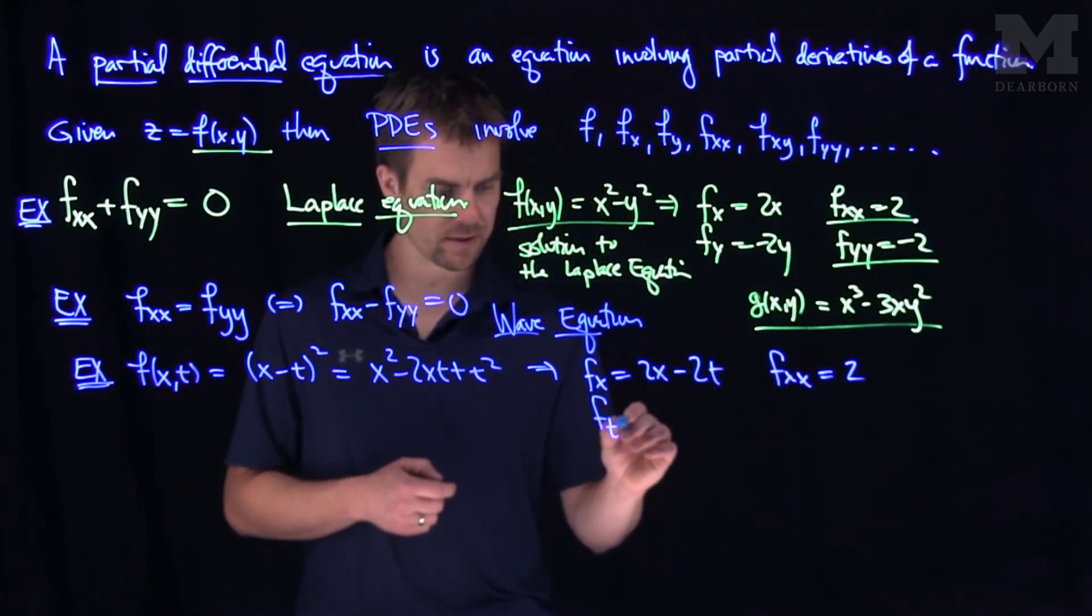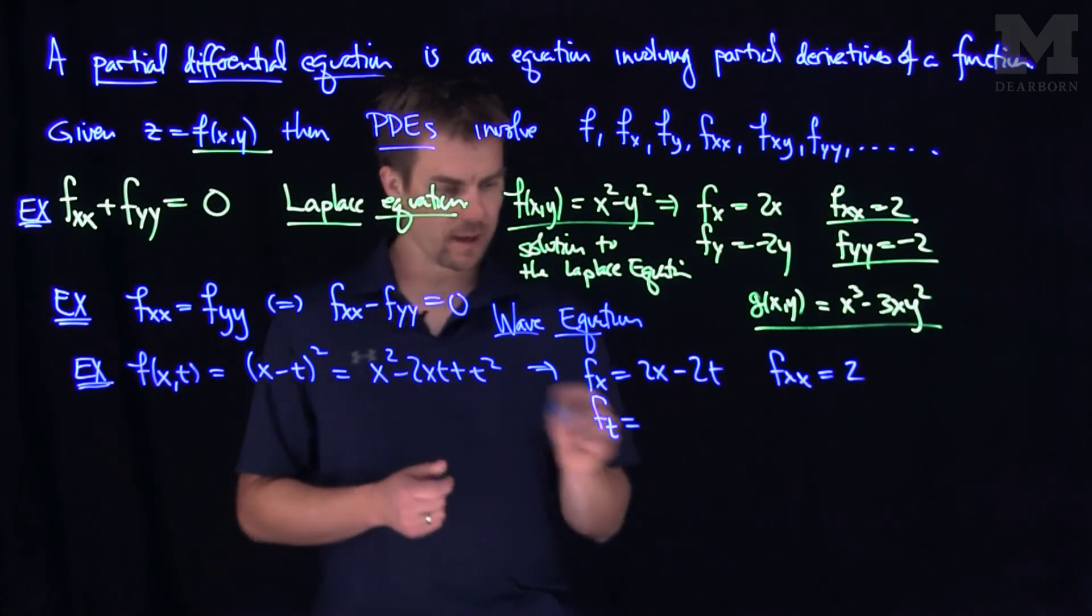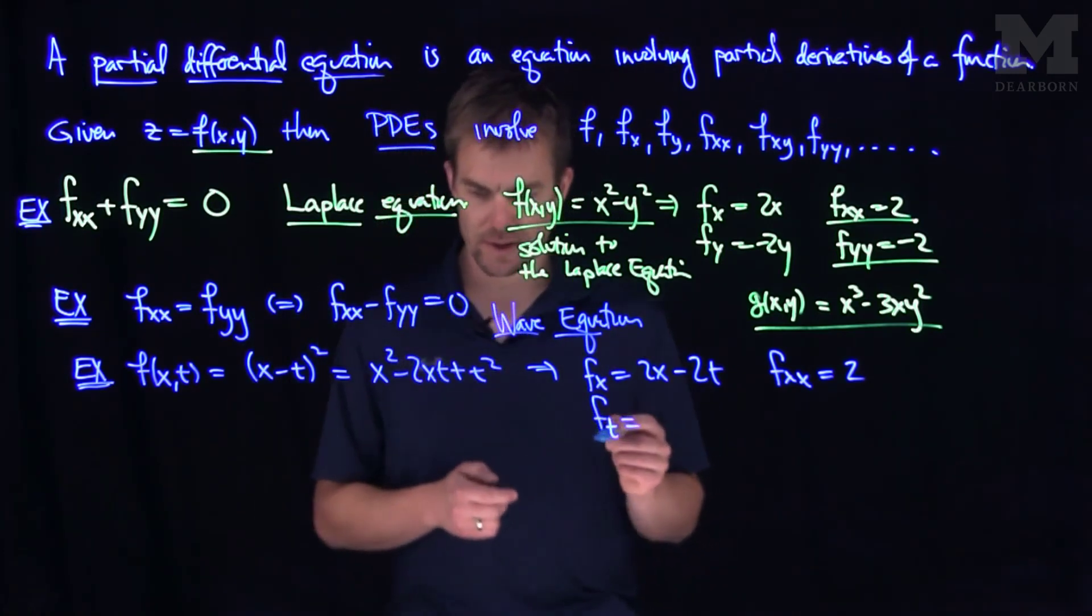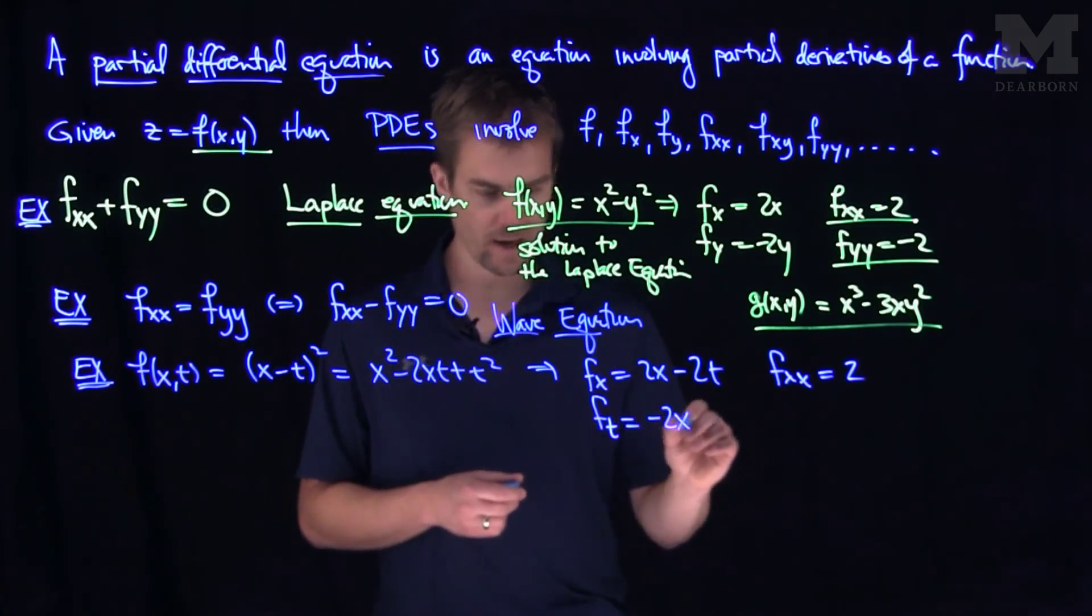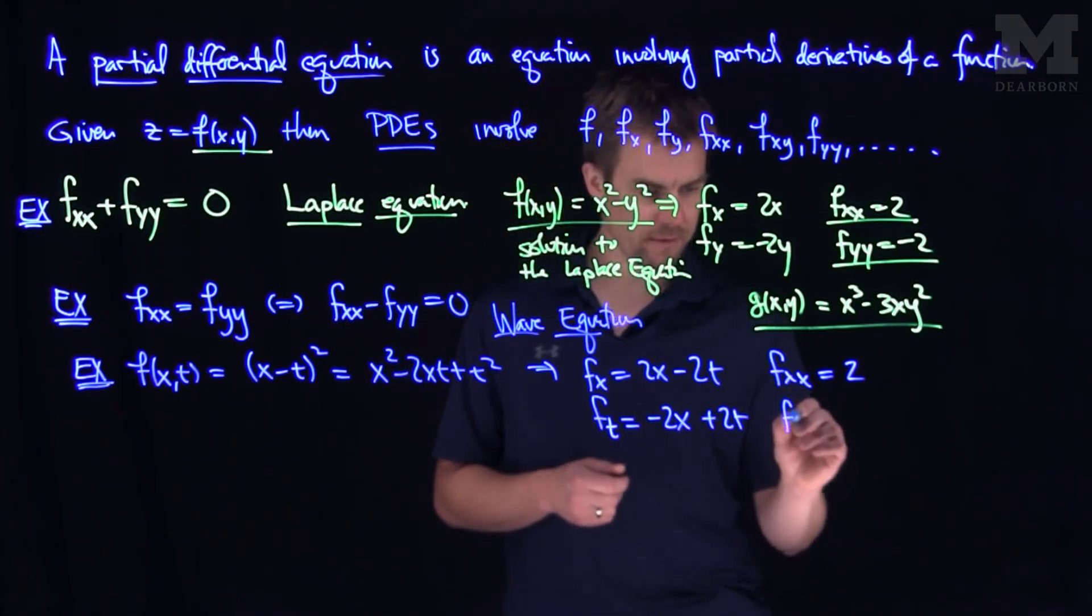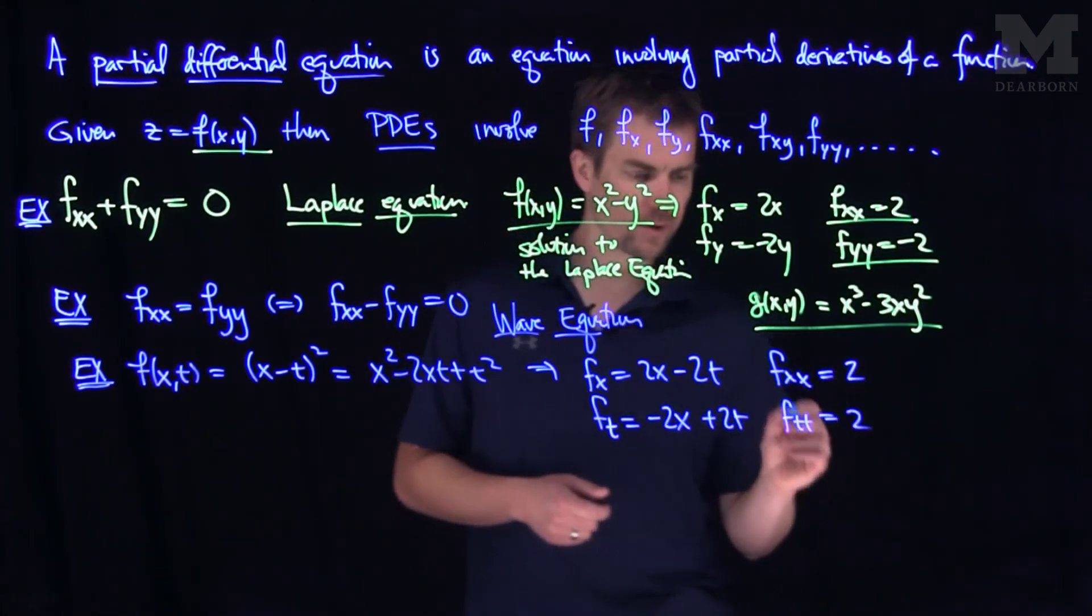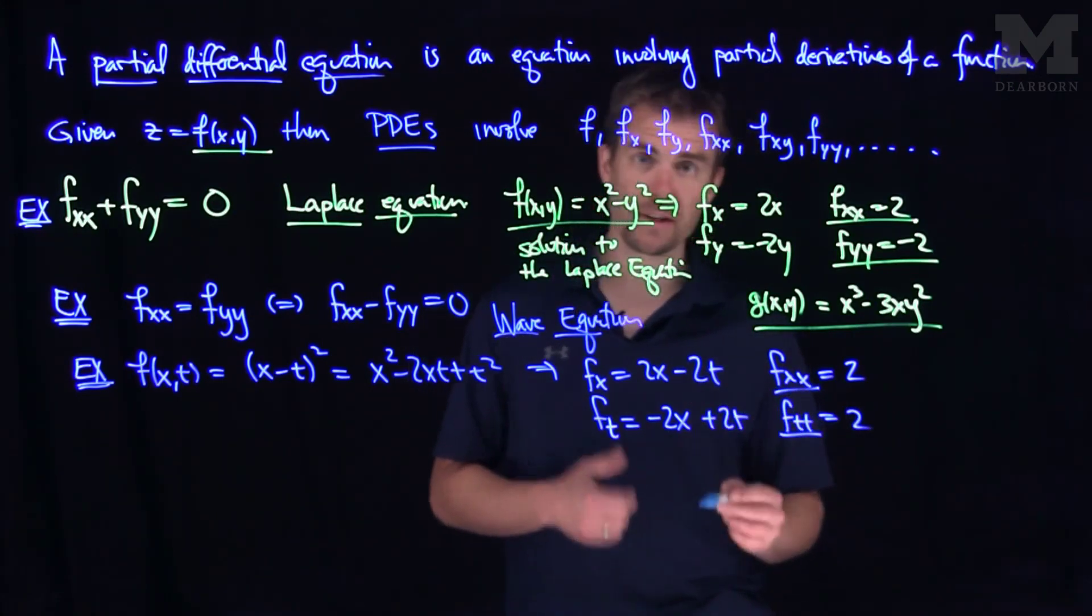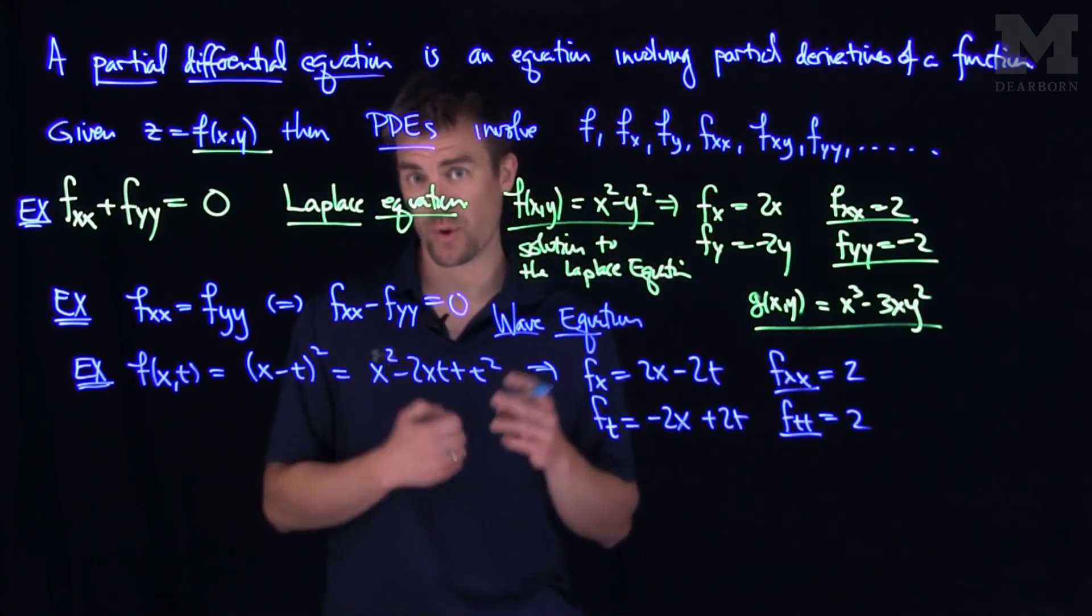If I do the t-derivative of this, the t-derivative is negative 2x plus 2t. And then the t-t derivative, f-tt will be 2. So, f-x-x is equal to f-tt, so this is a solution of the wave equation.